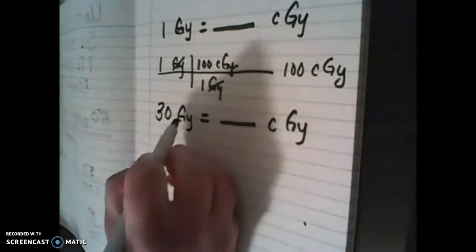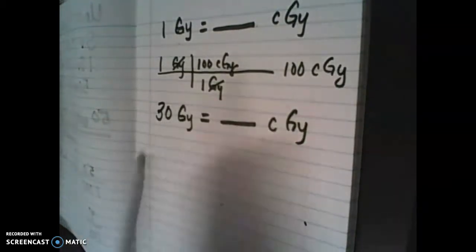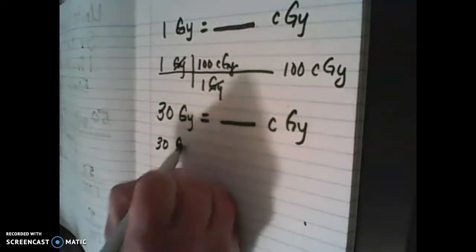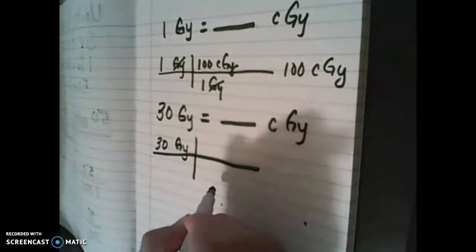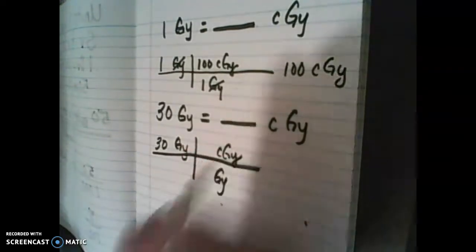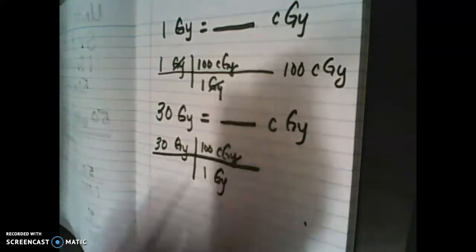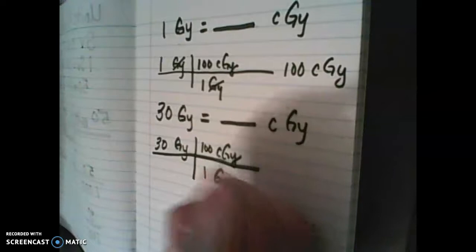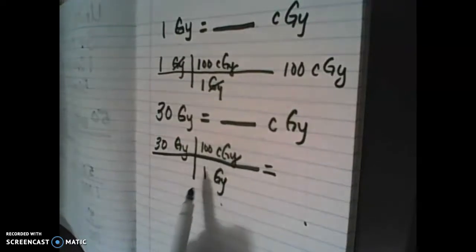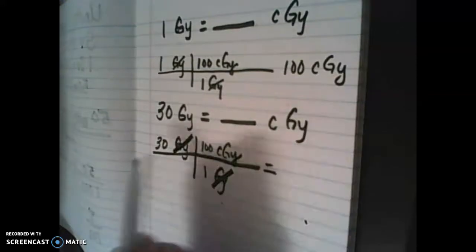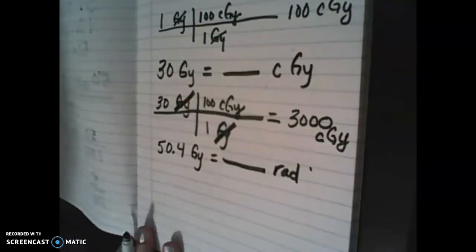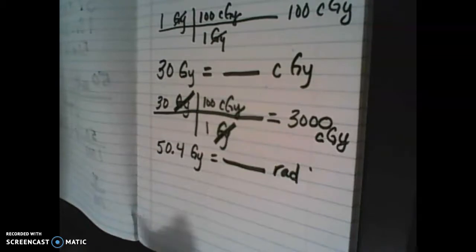Let's try it with a different number to see it another way. We're given gray and want to know how many centigrade. Put down what we know, draw a line, and apply the conversion factor — gray on the bottom and centigrade on the top. There are 100 centigrade in a gray. Multiply 30 times 100 divided by one — grays cancel out — 30 times 100 gives us 3,000 centigrade.